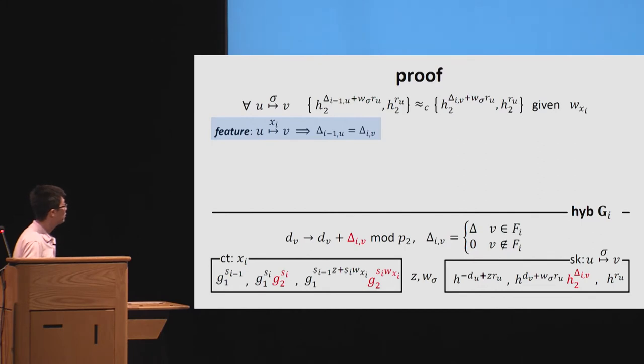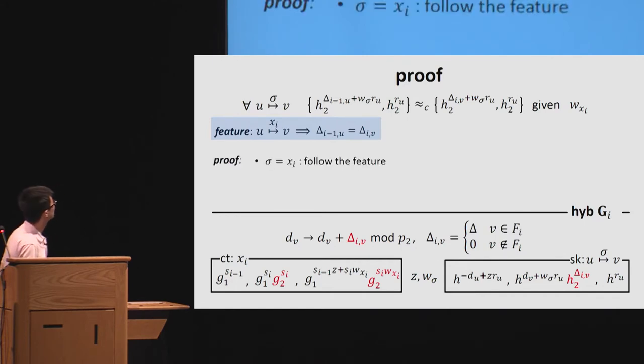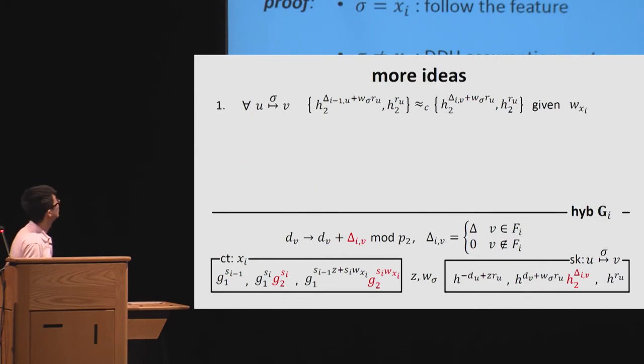So now, with the definition here, we have these features. Then we can prove this statement. So the proof is very simple. So for the case sigma equals x_i, we just use the features. Clearly, the two side is equal. And for the other case, sigma is not equal to x_i. We just use DDH to hide the difference between this side. Actually, this is the main idea in the proof.